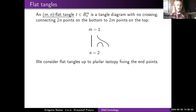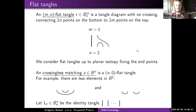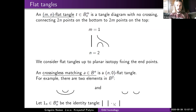I'm interested in a special subset of flat tangles called crossingless matchings, which start with zero points and end with 2n endpoints, forming semicircles called arcs. For example, when n equals two, you have exactly two crossingless matchings. I also fix the notation 1_n for the identity tangle with 2n vertical strands.